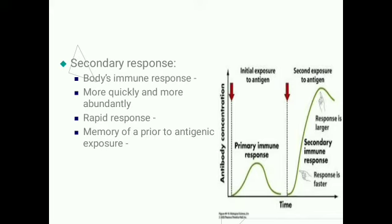Secondary response is the body's immune response to an antigen introduced on second and subsequent exposure. The secondary response is quick and more abundant — a large amount of antibodies are produced. It is rapid because of the presence of memory cells and memory of the prior antigenic exposure. Because the immune system has memory of prior antigenic exposure, on second and subsequent exposure large amounts of antibodies are produced.